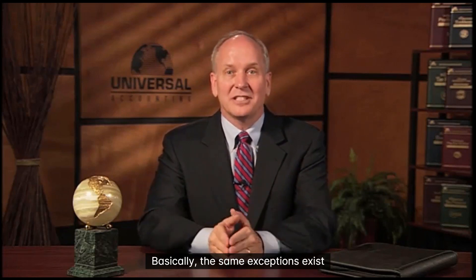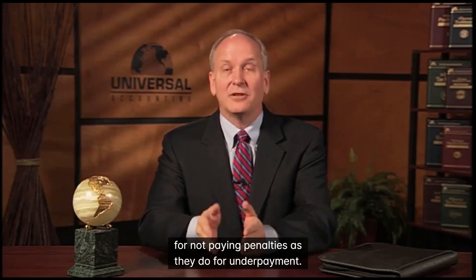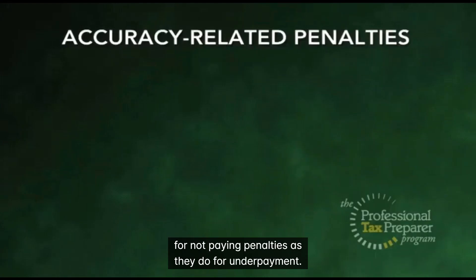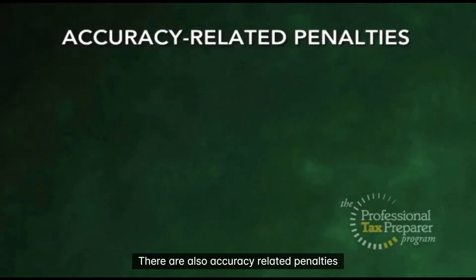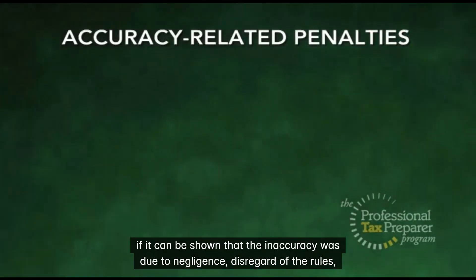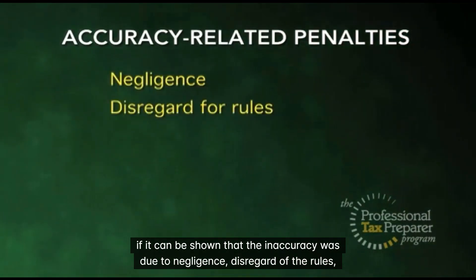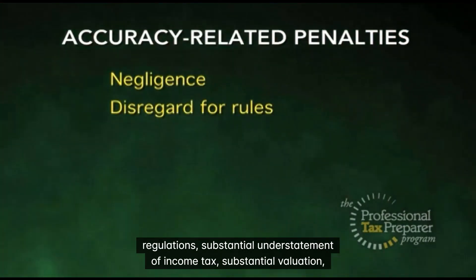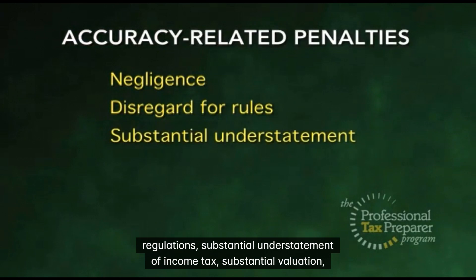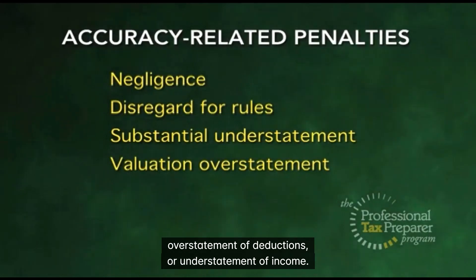Basically, the same exceptions exist for not paying penalties as they do for underpayment. There are also accuracy-related penalties if it can be shown that the inaccuracy was due to negligence, disregard of the rules or regulations, substantial understatement of income tax, substantial valuation overstatement of deductions, or understatement of income.